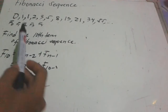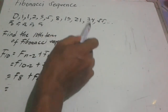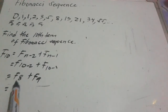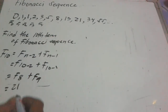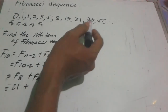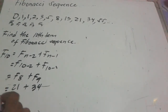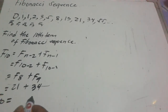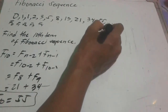Counting the terms: F sub 0, F sub 1, F sub 2, 3, 4, 5, 6, 7, 8 — F sub 8 is 21. Then F sub 9 is 34. So F sub 10 is 21 plus 34, which equals 55. That is our F sub 10.